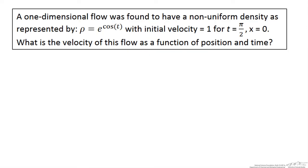We have a one-dimensional flow that is found to have a non-uniform density represented by rho equal to e to the cosine of t times time, with an initial velocity equal to 1 for time t equal to pi over 2 and x equal to 0. We want to determine the velocity of this flow as a function of position and time.